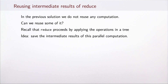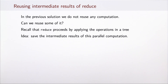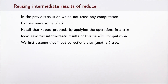In the previous solution, we did not reuse any computation across different elements of the output array — each element was computed entirely independently. A natural question is whether we could reuse at least some of these computations, even without the sequential pattern from before. Recall that reduce itself proceeds by applying operations in a tree to obtain a parallel implementation for associative operations. The idea is to save these intermediate tree results and make use of them when computing the output collection.